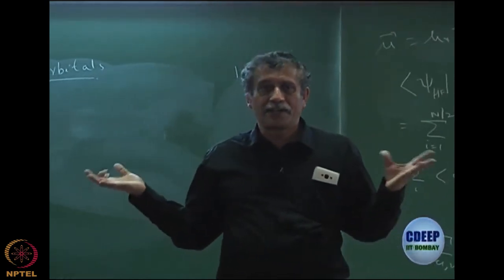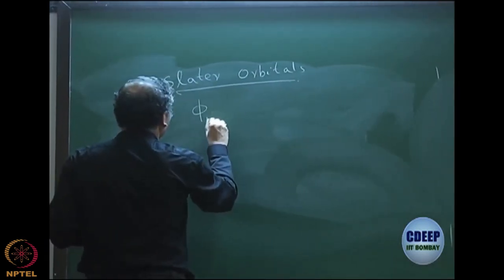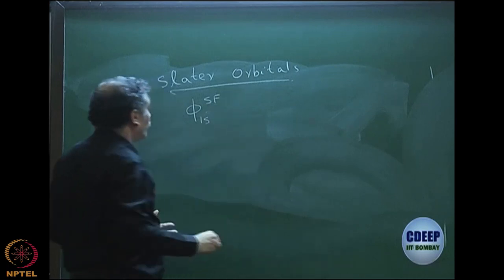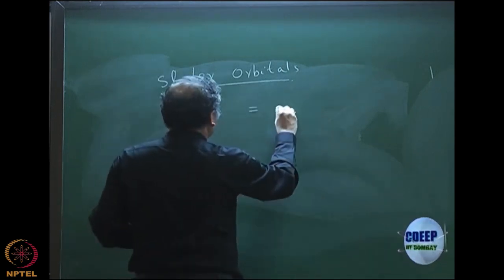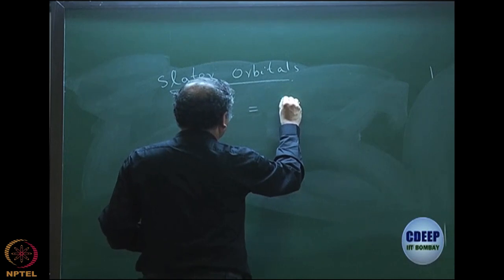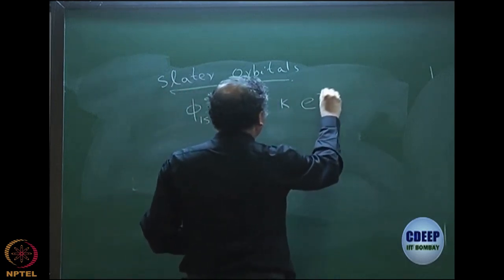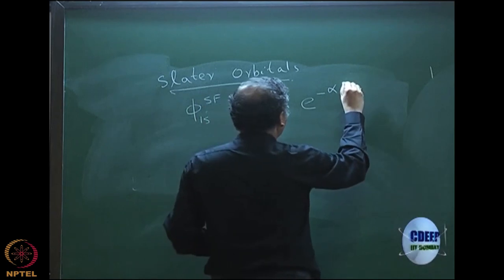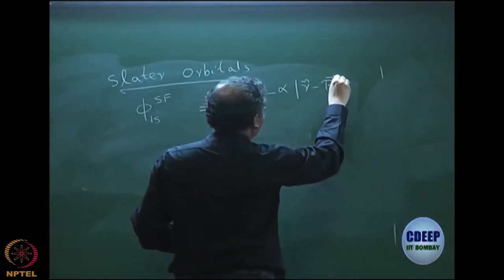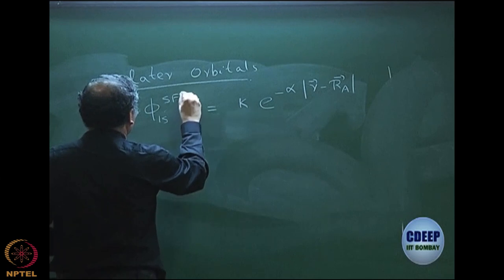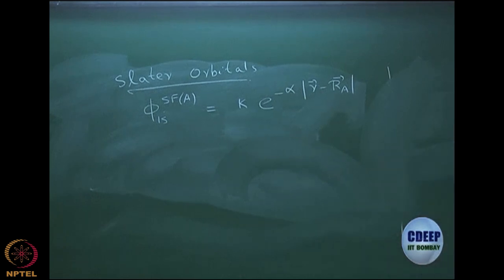One example is the hydrogen atom — you have already done Slater orbitals. A Slater orbital, let us take a 1s function — a Slater function. It will have a similar structure for 2s or 1s. So there is some constant k, a proportionality constant, and then exponential minus alpha times |r − r_A|. This is the 1s function centered on A — a typical form of a Slater function.